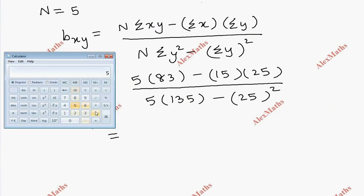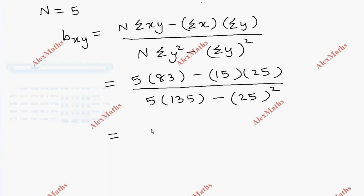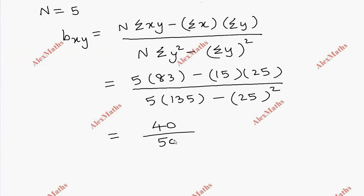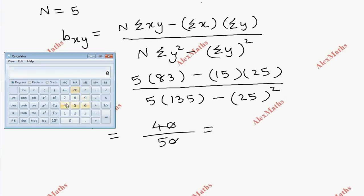So 5 into 83 minus 15 into 25. Numerator is 40, divided by denominator 5 into 135 minus 25 whole square. So total is 4 by 5, which gives bxy equal to 0.8.